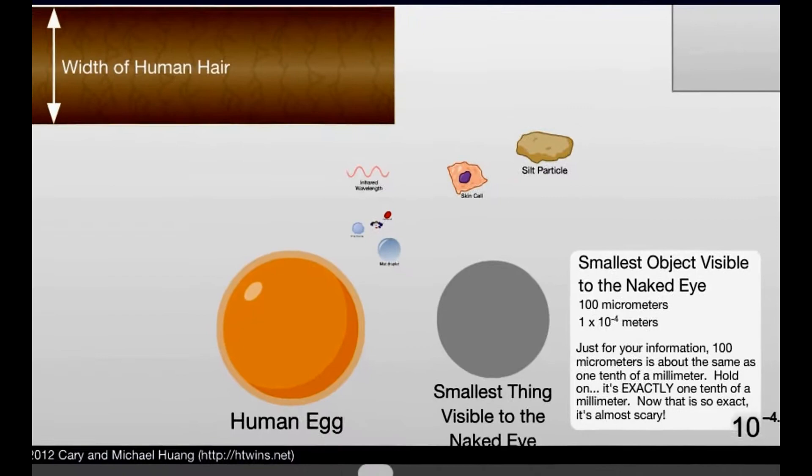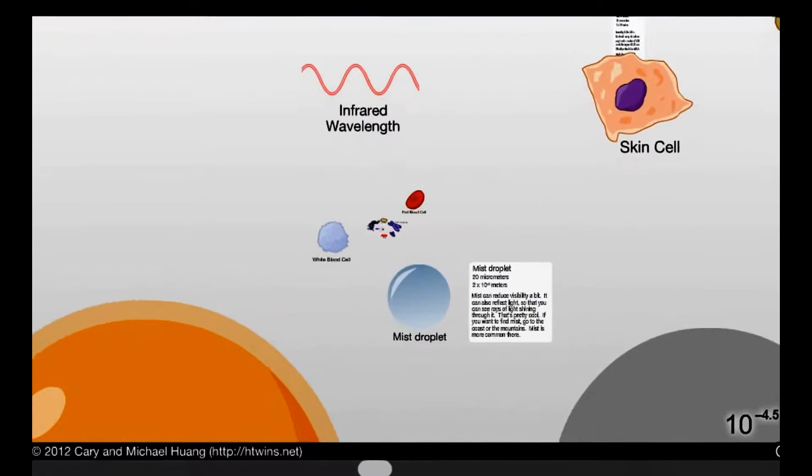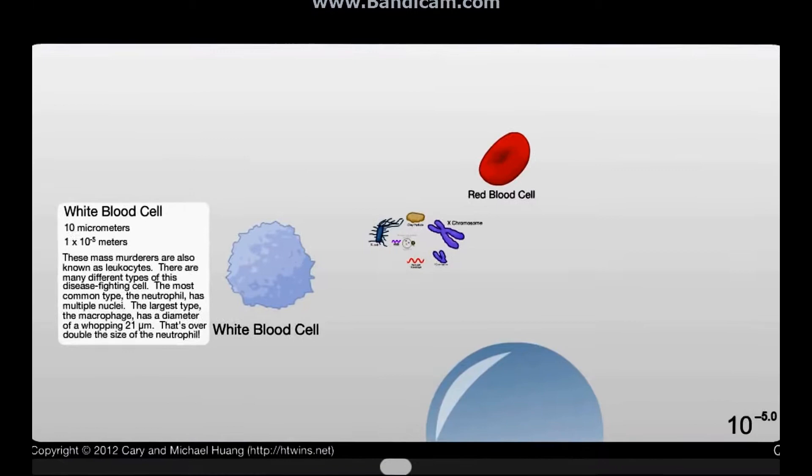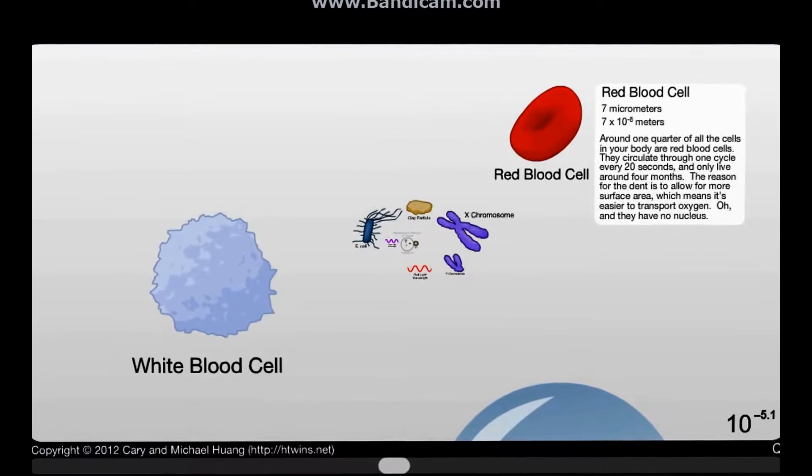And what's the smallest thing is? 100 micrometers. And what about a skin particle? 50. That's weird. Mist droplet. Yeah, I can see that. White blood cell, 10 micrometers. Then you're getting down to the red blood cell, which is 7 micrometers. Holy crap.